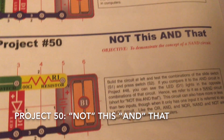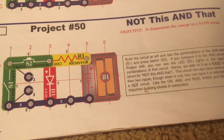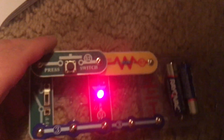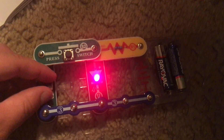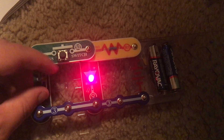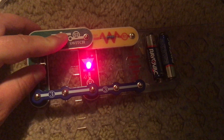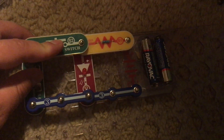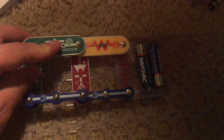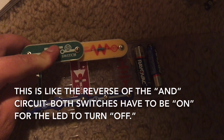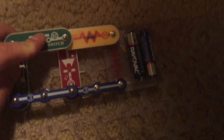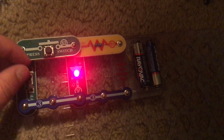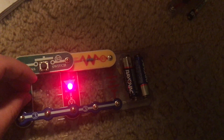Project 50 is another mind-blowing one, called 'Not This and That,' demonstrating the concept of a NAND circuit. Both switches are off and the red LED is on. When I turn on the slide switch the LED stays on. When I push the press switch the LED stays on. But when I turn on the slide switch while holding down the press switch, the LED turns off. This shows that both switches need to be on for the red LED to turn off — when they are both on the LED is shorted and does not light. When I turn off both switches the LED stays on.